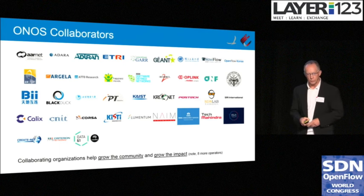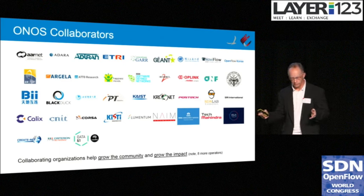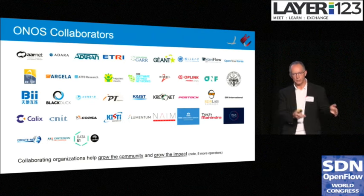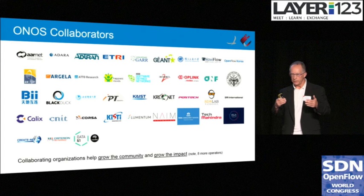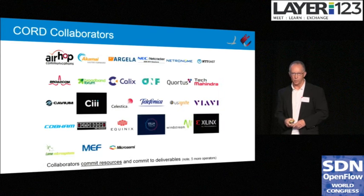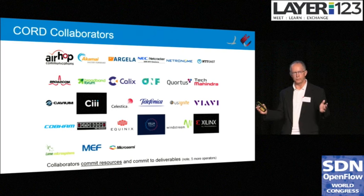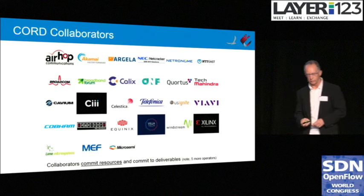These are the collaborators for ONOS — there's quite a wide range of types of organizations collaborating with us. The collaborating organizations help grow the community and grow the impact, whereas the partners pay and support the engineering team at ON Lab. The collaborators do not pay, but they commit resources and deliverables that bring value into the ecosystem. Between the ONOS collaborators and the CORD collaborators, we've now added another dozen service providers — so all in all, working with around 20 service providers on different solutions.